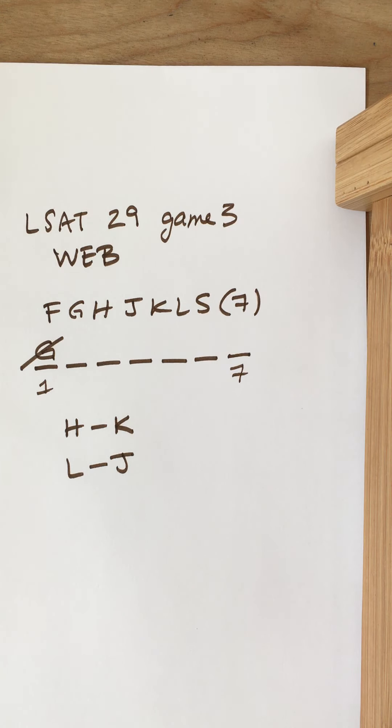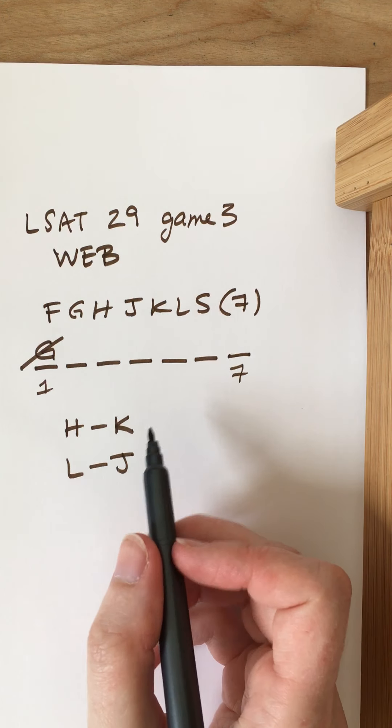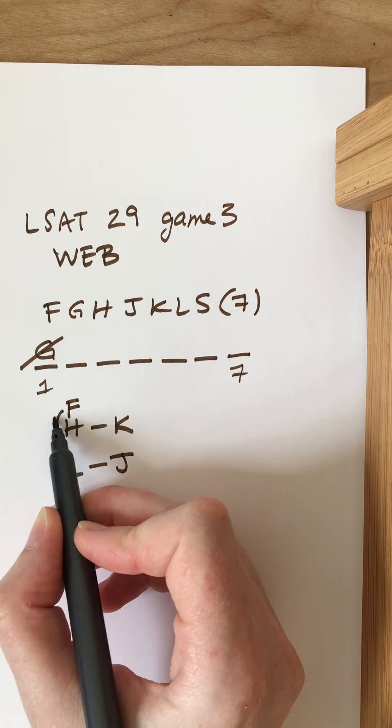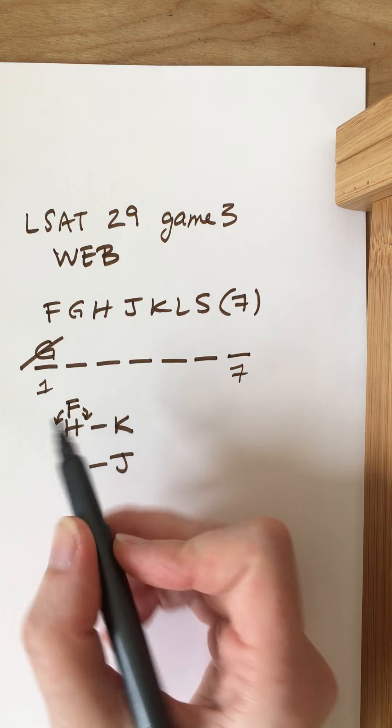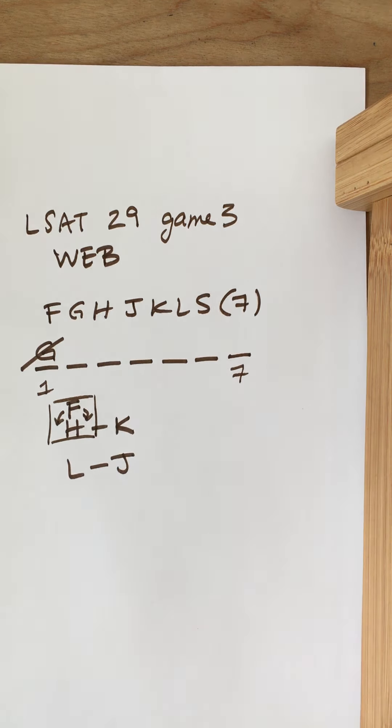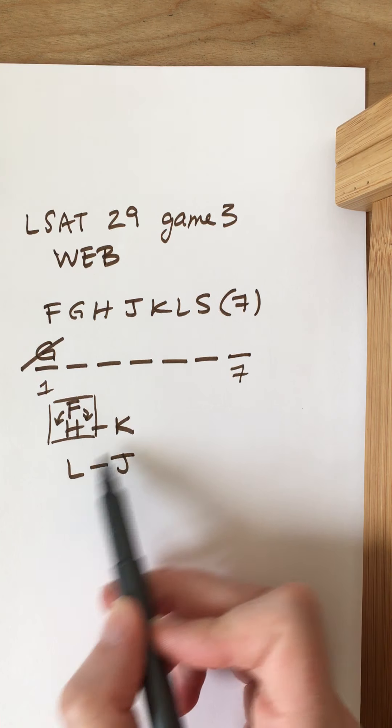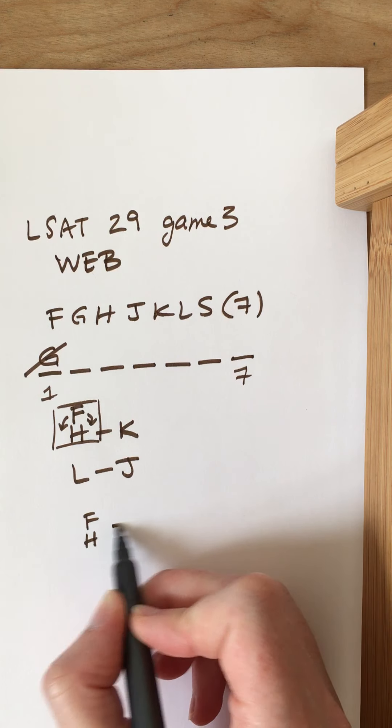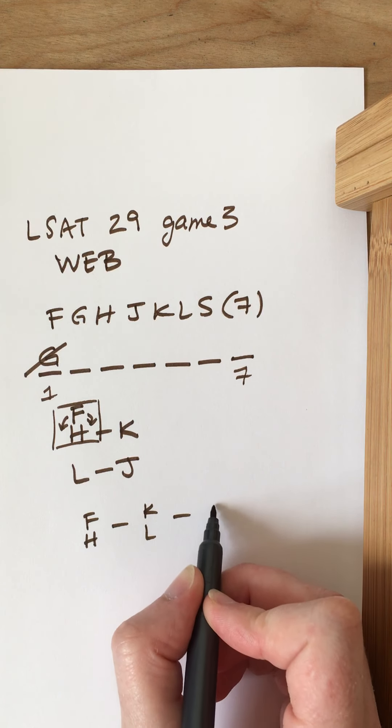F is either immediately before or immediately after H. So there are a couple ways that we can represent that. I'm just going to put F on top of H there. So these guys are stuck together and F can be either before or after. And then K is presented either immediately before or immediately after L. So K and L now need to be connected.